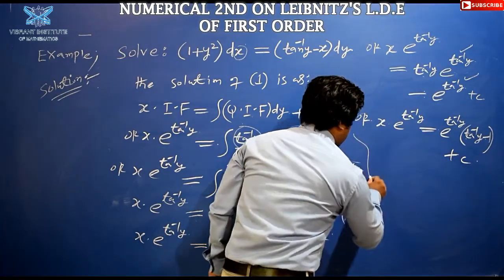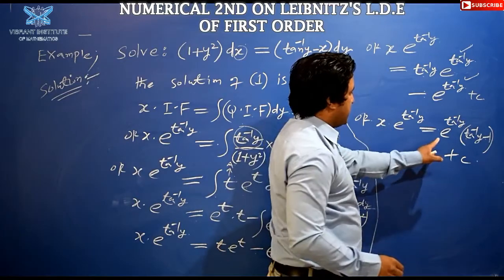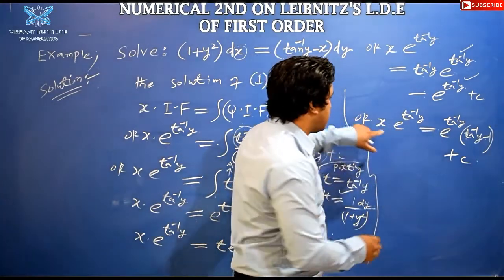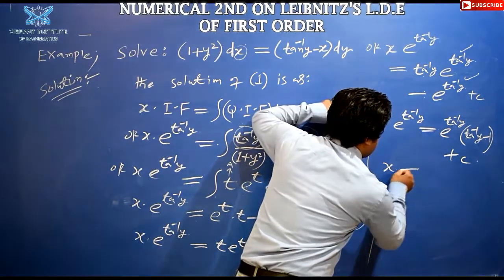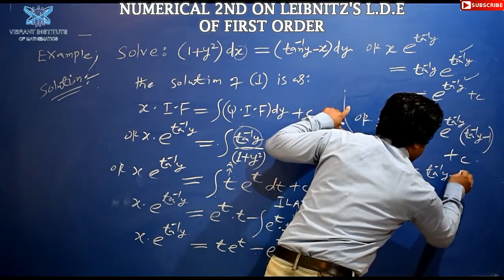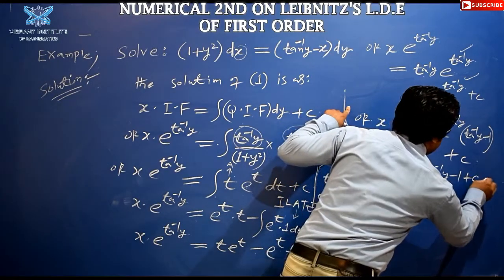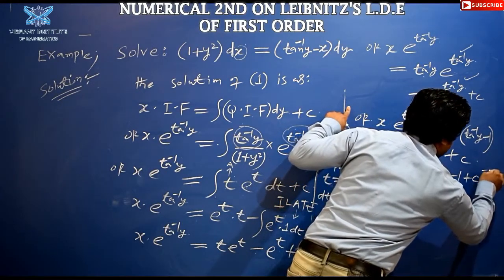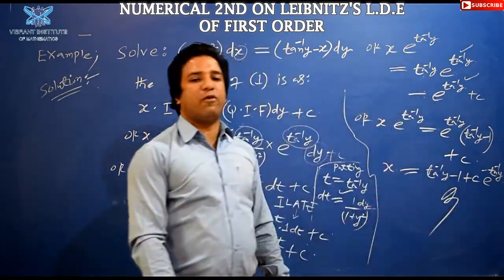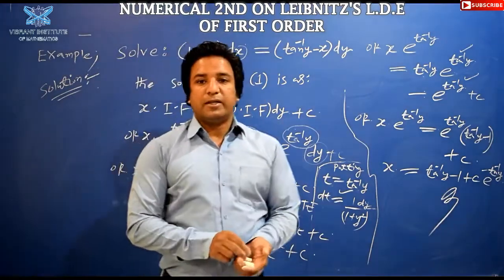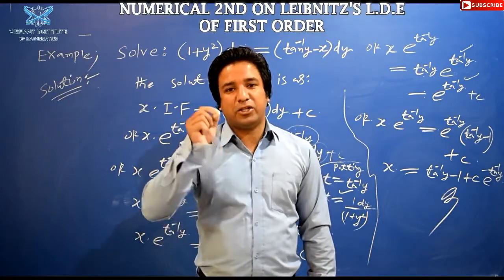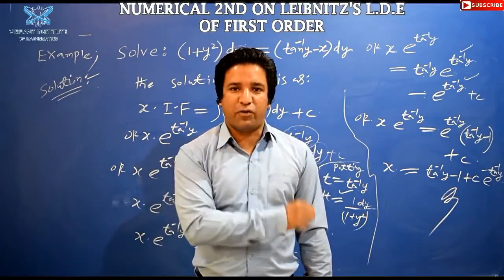Dividing both sides by e^(tan⁻¹y): x = (tan⁻¹y − 1) + c · e^(−tan⁻¹y). This is the required solution for the given question, which is the second numerical based on linear differential equations of first order.